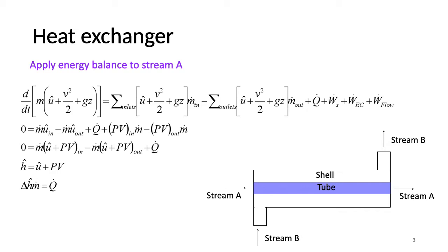First I am going to apply the energy balance to the stream A of the heat exchanger. If the system is operating at steady state the accumulation term goes to zero. Further, inlet and outlet mass flow rates will be equal at steady state. Kinetic and potential energy changes are negligible. There is no shaft work or expansion contraction work. The flow work can be represented as PV times m dot. U plus PV is the enthalpy. The energy balance for a heat exchanger can be represented as the change in enthalpy times mass flow rate. Keep in mind that the enthalpies are specific enthalpies.